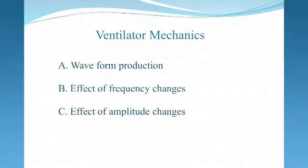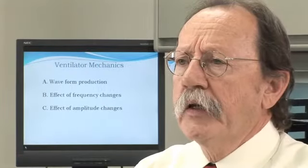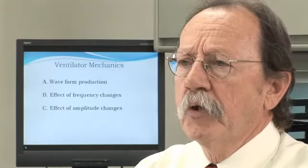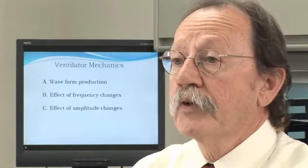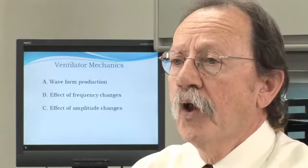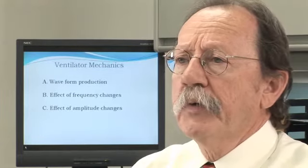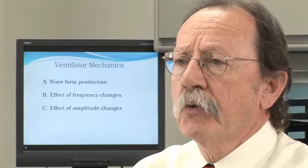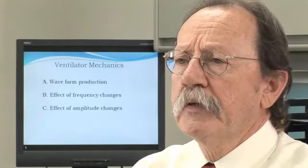What are the mechanics? Well, the waveform production is typically generated at the proximal end of the endotracheal tube, and then it is dampened out to a more sinusoidal waveform. However, the jet ventilator, because of its velocity and its short inspiratory time, has a slightly different waveform when it's sent down the airway.